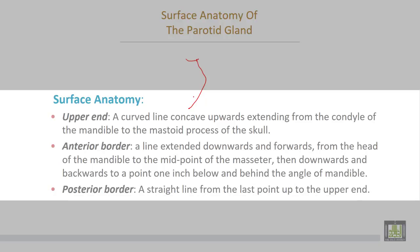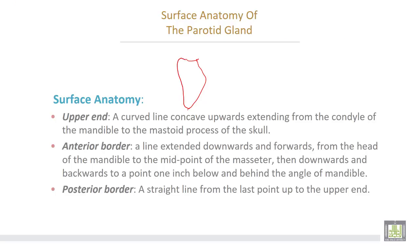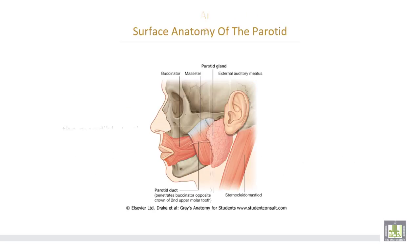The posterior border is a straight line from the last point to the upper end of the gland. This completes the surface anatomy of the parotid gland — the upper end is concave, this is the anterior border, and this is the posterior border.